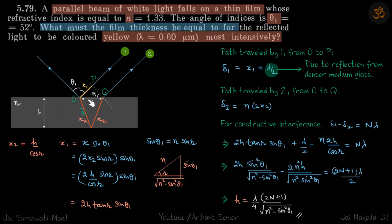To calculate the path difference, up to a certain point the path difference was the same. If we draw perpendiculars at points P and Q, we need to find the path difference between O to P and the corresponding length. We need to calculate lengths X1 and X2. Let's assume the film thickness to be H.